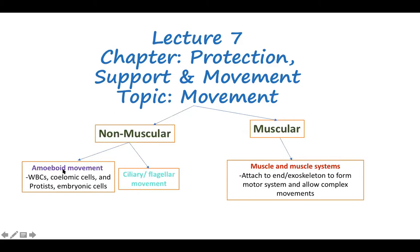The first type of non-muscular movement is amoeboid movement, which we have seen in amoeba, which is a protozoa. It also occurs in white blood cells, in certain coelomic cells and other protists, and in embryonic cells. When a zygote is formed, there are divisions and cellular layers. Those cells move from one place to another and make certain layers — these are also amoeboid movements.